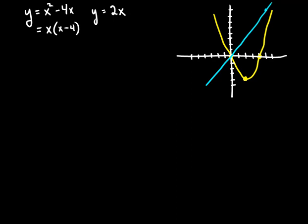Now this quick graph also tells me that the linear function is going to be above the quadratic function. So my integrand is definitely going to be 2x minus the quantity x squared minus 4x. But I'll solve for the points of intersection first.